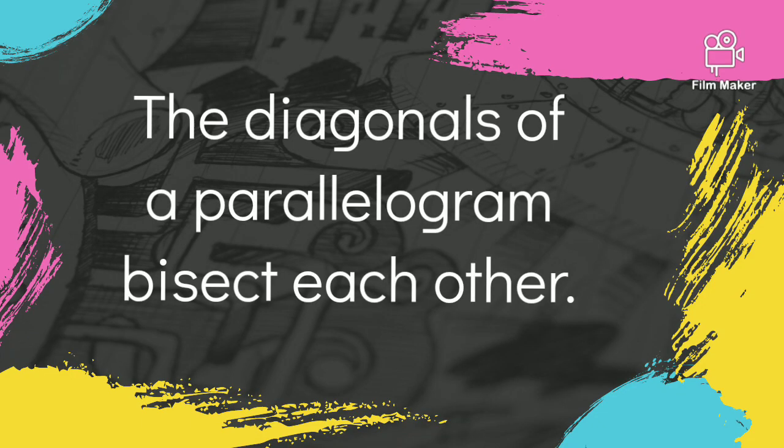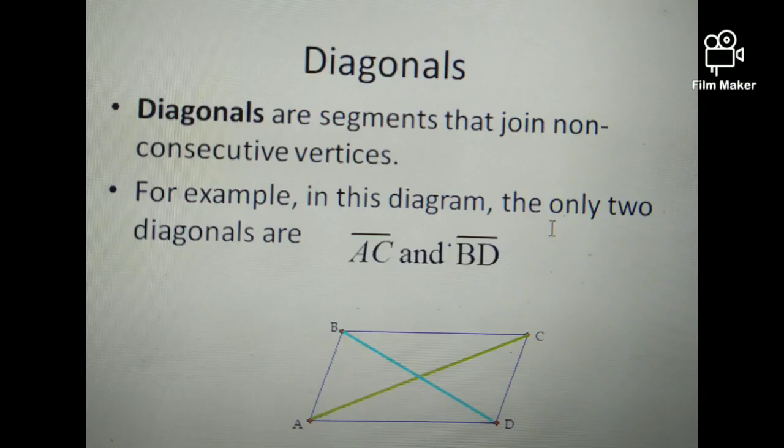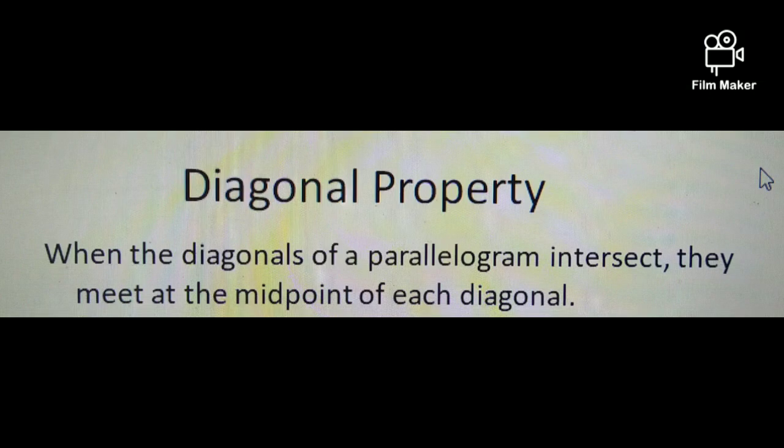The fourth property of a parallelogram: the diagonals of a parallelogram bisect each other. Diagonals are segments that join non-consecutive vertices. For example, in this diagram, the only two diagonals are AC and BD, the one with the green and blue line. When the diagonals of a parallelogram intersect, they meet at the midpoint of each diagonal.